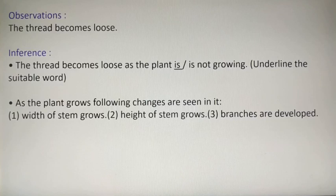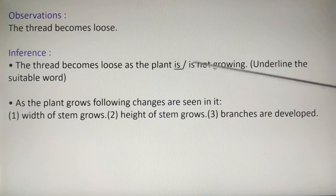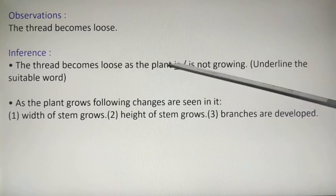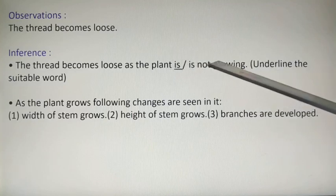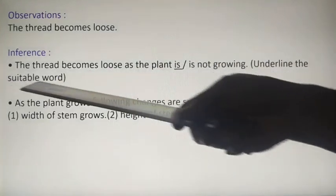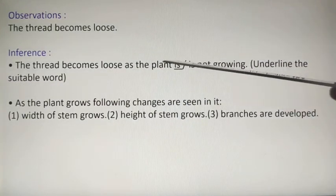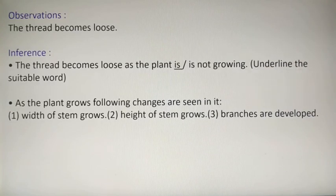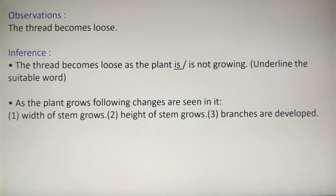From this we derive the inference or conclusion. Two options are provided and you have to underline the correct one: 'the thread becomes loose as the plant is / is not growing.' Why has the thread become loose? Because the plant is growing. So underline 'is' and cross out 'is not.' The thread becomes loose as the plant is growing.